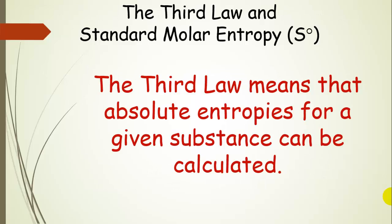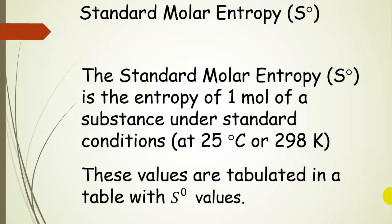The third law means that absolute entropies can be calculated for a given substance. The standard molar entropy is the entropy of one mole of a substance under standard conditions, at 25 degrees Celsius or 298 Kelvin. These values are tabulated as were the heats of formation, delta HFs, that we saw earlier in the course.